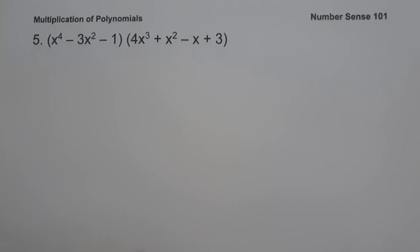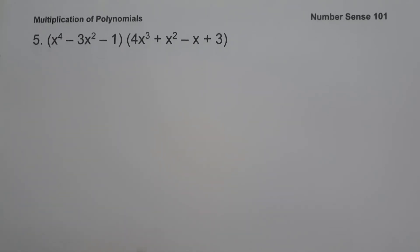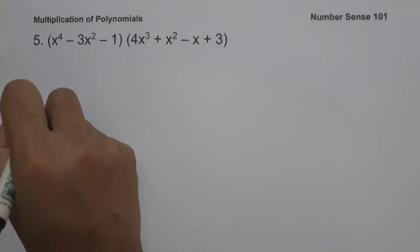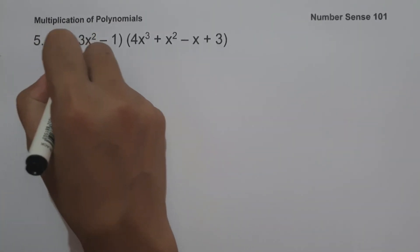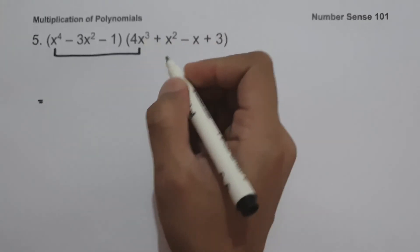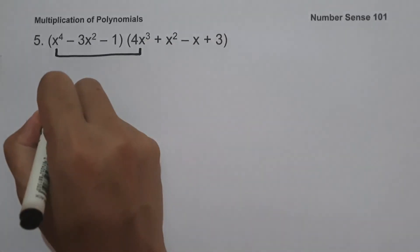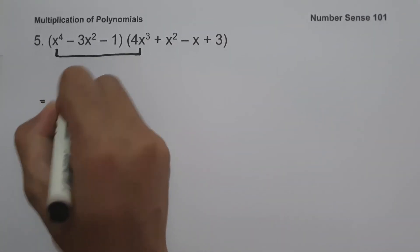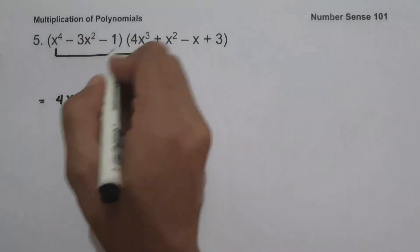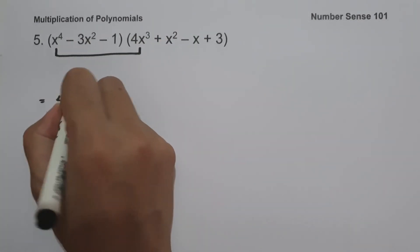On our last example, we have the quantity x raised to 4 minus 3x squared minus 1 times the quantity 4x cubed plus x squared minus x plus 3. To simplify this one, we are going to use the distributive property. x raised to 4 multiplied by 4x cubed: add exponents 4 plus 3 to get 4x raised to 7.